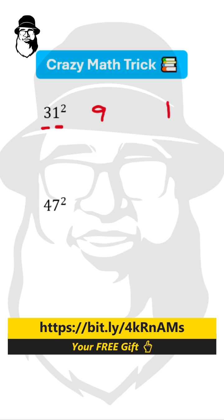And then take both the digits, multiply them. 3 times 1 is 3, and double that - double of 3 is 6. And that's our final answer, 961. The answer comes in 3 stages.